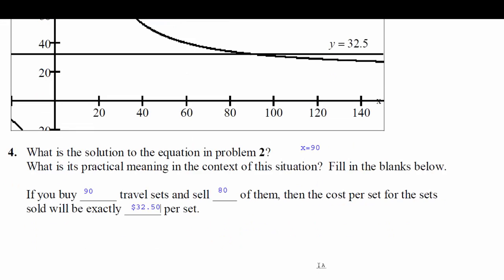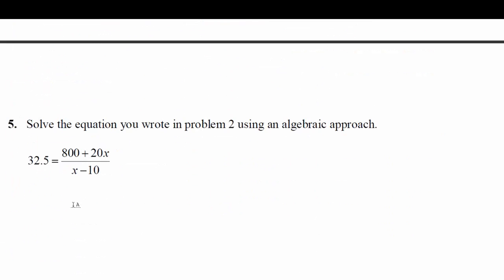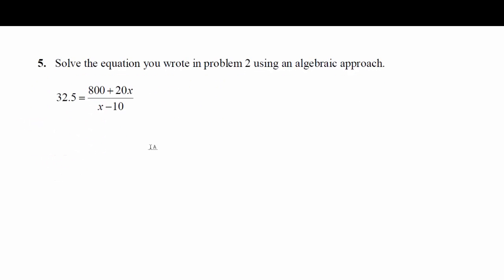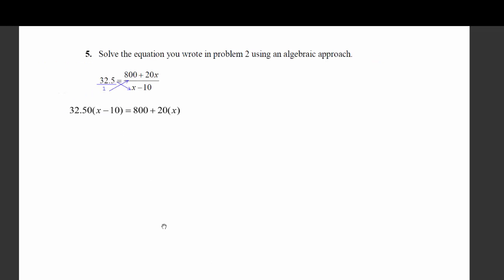So let's take a look at question number five. It says, let's solve that same equation, but using algebra. So my suggestion would be, why don't we cross multiply? And you can treat this 32.5 as a fraction, as 32.5 over 1, or 32.50 over 1. So again, we're going to cross multiply to get something that looks like this. And now I'm going to distribute this 32.50.